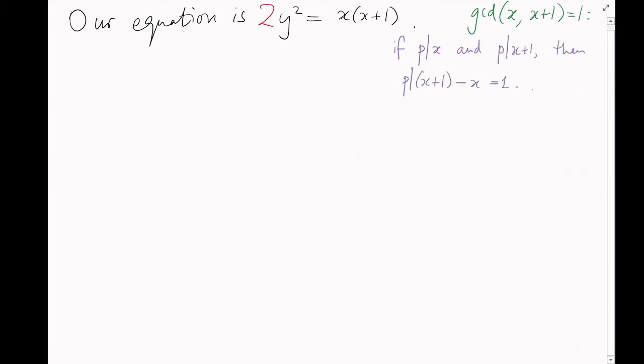So, our equation is y squared equals x times x plus 1 over 2. Let's immediately multiply that through by 2. The first thing I want to notice is that the greatest common divisor of x and x plus 1 is automatically equal to 1. After all, suppose we have some non-trivial factor p that divides both x and x plus 1, then it must divide their difference, which is equal to 1. But the only positive integer that divides 1 is 1. So, this is a contradiction. Non-trivial factors can't exist here.